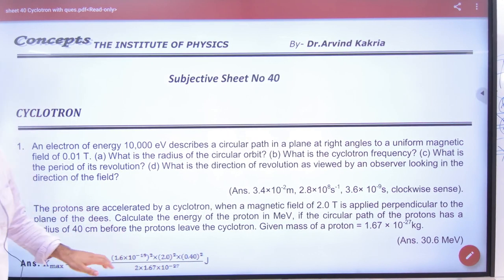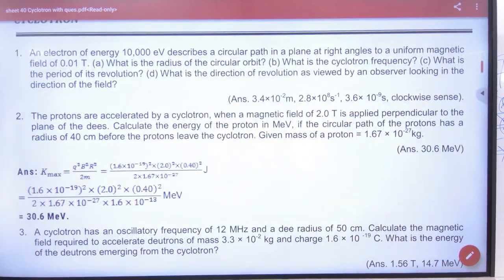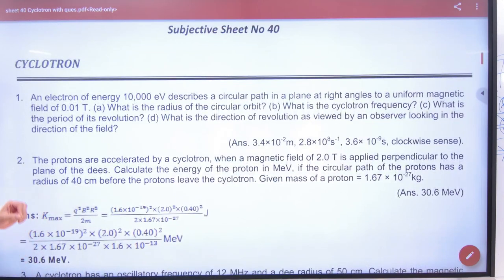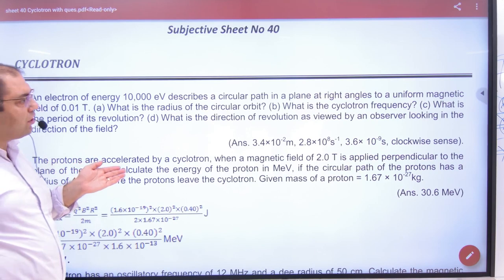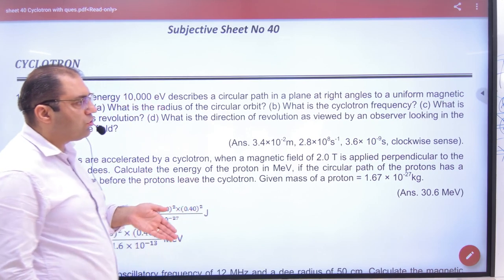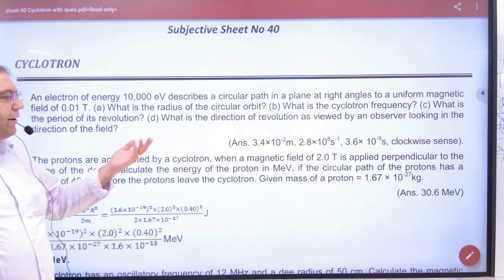Sheet number 40, question number 1. Last part, what is the second part? The question is: an electron of energy given describes a circular path in a plane at right angle to uniform magnetic field. So what do you say? Radius.